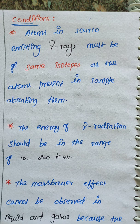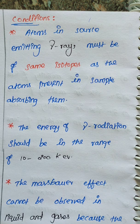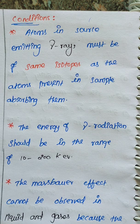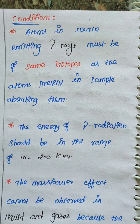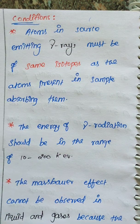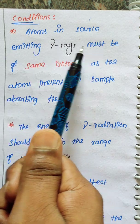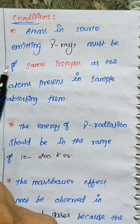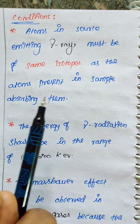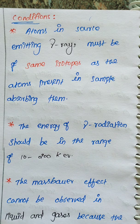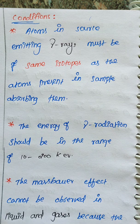Next, we are going to discuss the conditions. The principle involves radioactive nuclei. Now, the conditions: the first condition is that the atoms in the source emitting gamma rays must be of the same isotopes as the atoms present in the sample absorbing them.